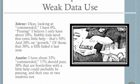So the kind of talk that came out of this is teachers saying things like, okay, looking at commended, I have zero percent passing. I believe I only have about 20 percent. Bubble kids that need that extra help, that's 50 percent and 30 percent on growth. Of those that 30 percent, a fifth failed it last year. The next teacher talks and he says, I have about 33 percent commended, 17 percent should pass, 30 percent that are borderline with a little help could probably be passing, and then one or two students not.